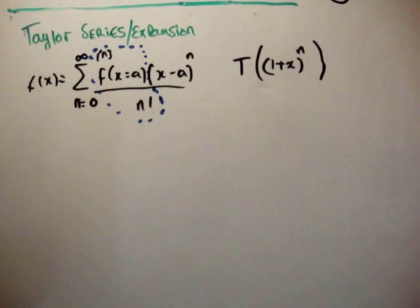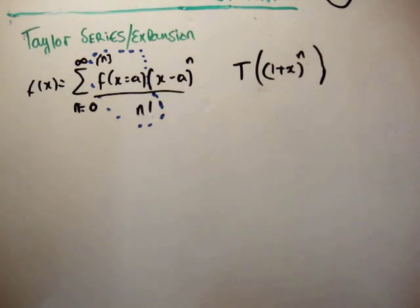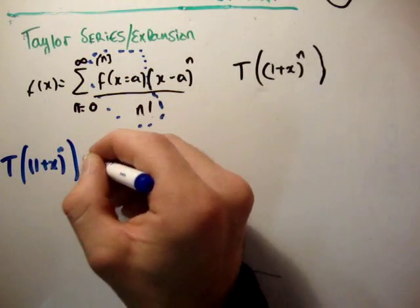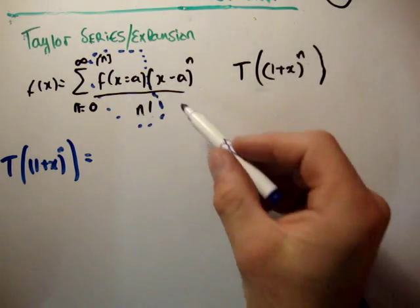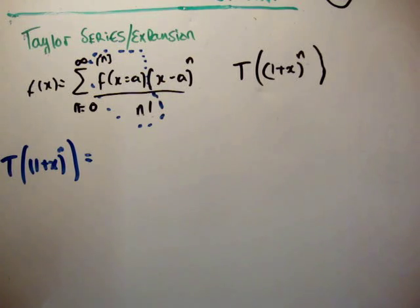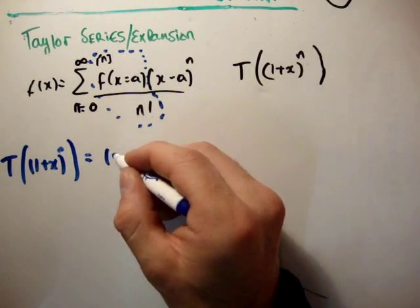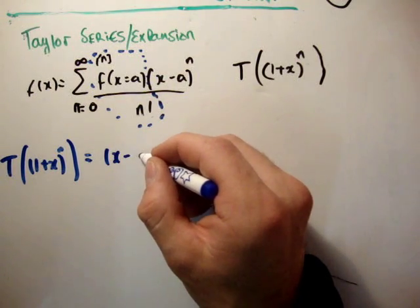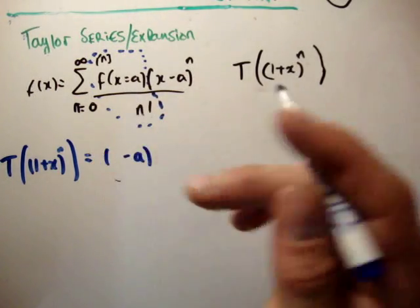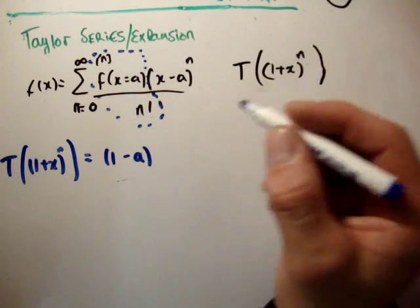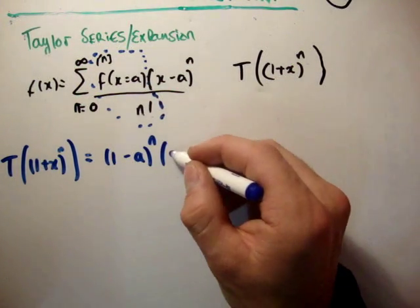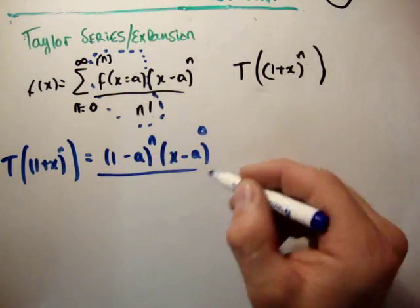So we have each of those coefficients, and we multiply it then by x minus a to the n. So that means that the Taylor series, or the Taylor expansion, of 1 plus x to the power of n, was each of my coefficients, as I said a moment ago, multiplied by x minus a to the n. So the first was 1 plus a to the n, then we had x minus a to the 0, divided by 0 factorial.